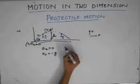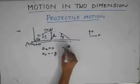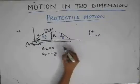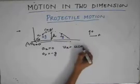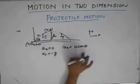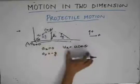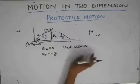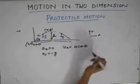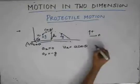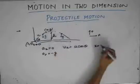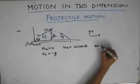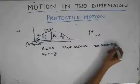The velocity at any instant of time of the particle in the x-direction is ux equals u cos theta. Since it has no acceleration in the x-direction, the position of the particle in the x-direction is given by uniform motion: x equals u cos theta times t.